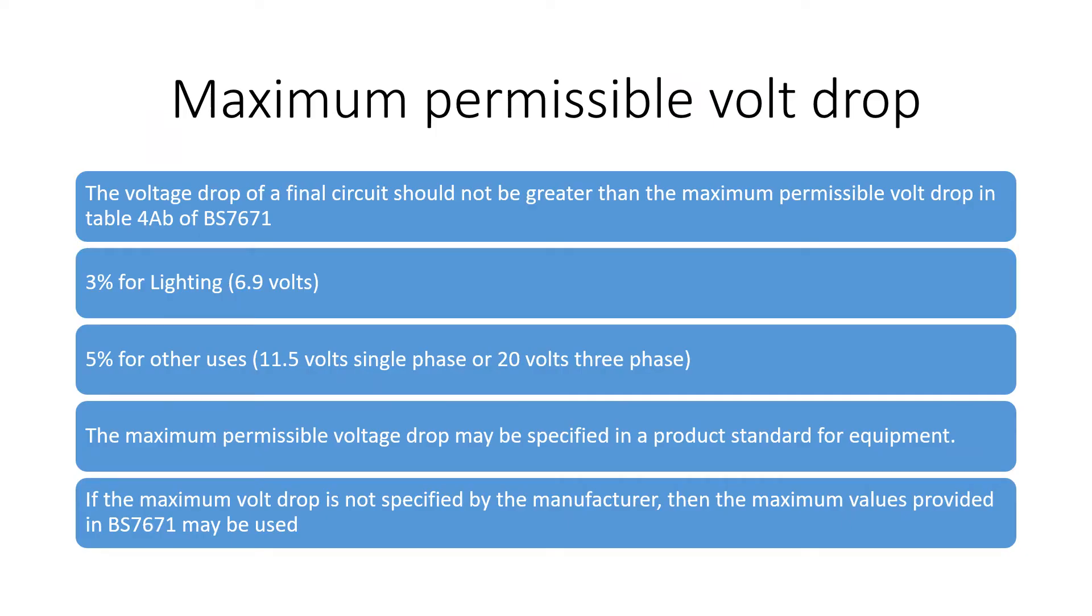So the requirements of voltage drop are found in Appendix 4 of BS7671, which requires that the voltage drop between the origin of the installation and the load should not be greater than the values in Table 4AB of BS7671, which are 3% for lighting and 5% for other uses. This is for low voltage installations supplied from the public supply. This is to ensure that the voltage is not so low that it would impair the proper functioning of the equipment.